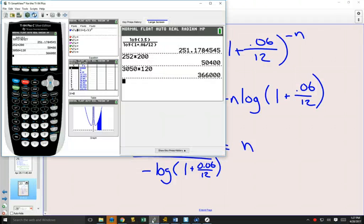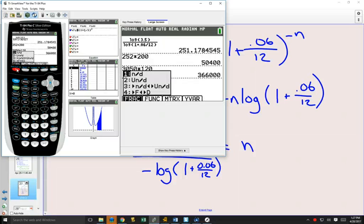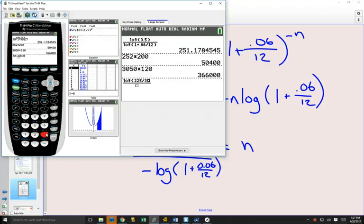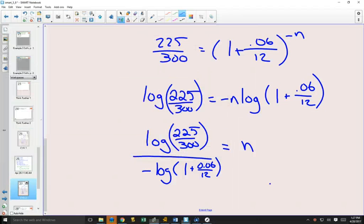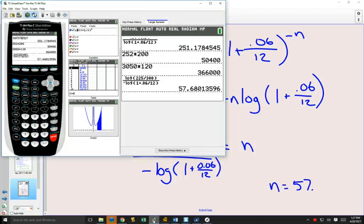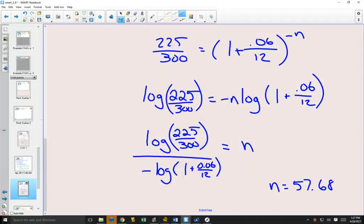Use our fraction button. log of 225 divided by 300 over negative log 1 plus 0.06 divided by 12. 57.7. 57.68, 57.7.